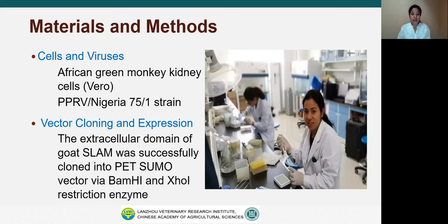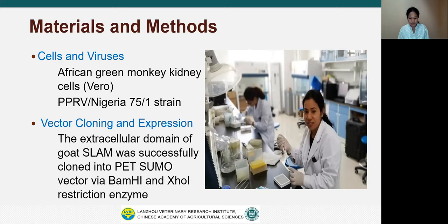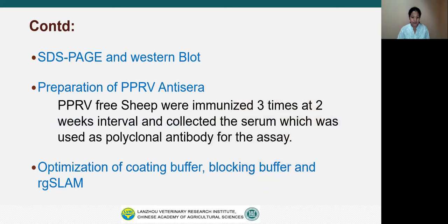In materials and methods, the cells and viruses used are African green monkey kidney cells, known as Vero cells. We used a vaccine strain of PPRV Nigeria 75/1. Once the PPRV Nigeria 75/1 vaccine virus was grown in Vero cells and cells showed greater than 80% CPE (cytopathic effect), the virus was harvested by freezing and thawing three times, and TCID50 was calculated using Reed and Muench's method. The extracellular domain of goat SLAM gene was synthesized and cloned into pET-SUMO vector via BamHI and XhoI restriction sites in China.